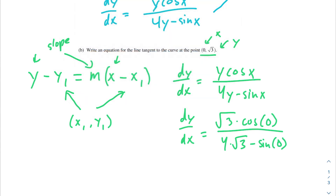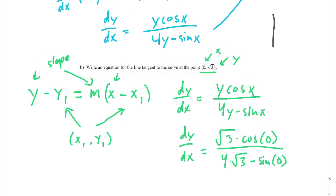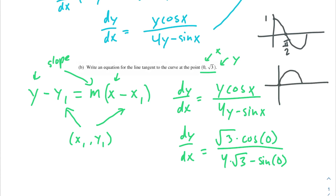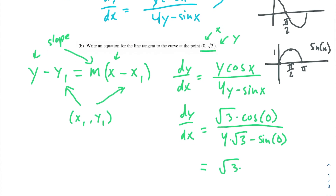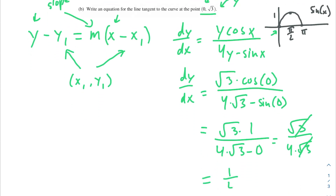It's a really good idea to know what the graphs of cosine and sine look like. The graph of cosine starts up at 1 where x is 0, then dips down to 0 at pi over 2. Sine starts at 0 and hits 1 at pi over 2. So cosine of 0 is 1, and sine of 0 is 0. We get square root of 3 over 4 times the square root of 3 — the square roots cancel, giving us a slope of 1/4.